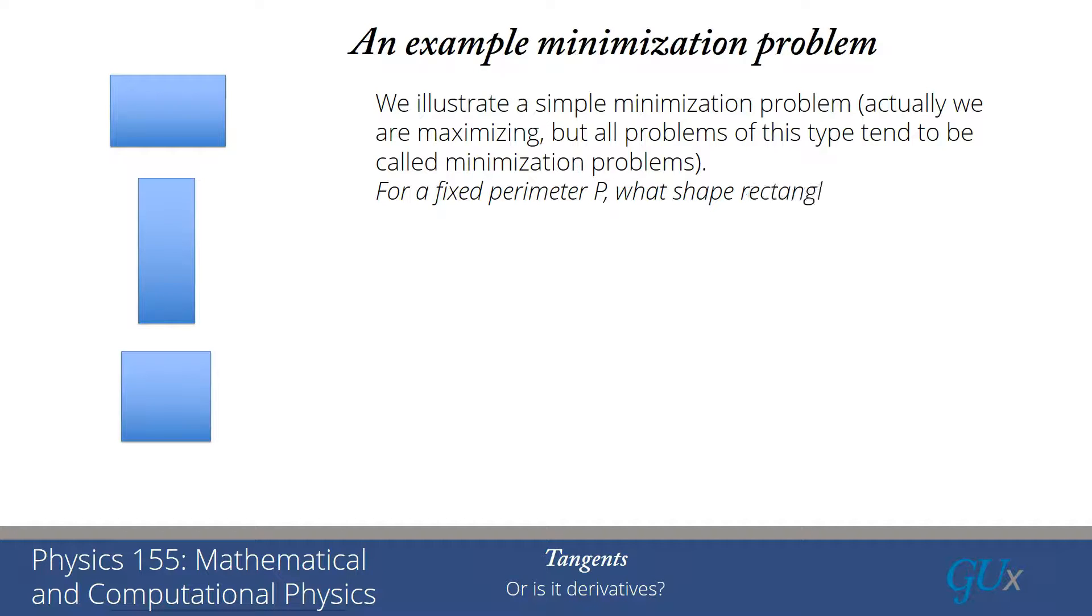So what is the problem that we're going to solve? We're going to take a fixed perimeter p, and we're going to ask what shape rectangle has the largest area for a fixed perimeter. And I've drawn some potential rectangles for you on the left.